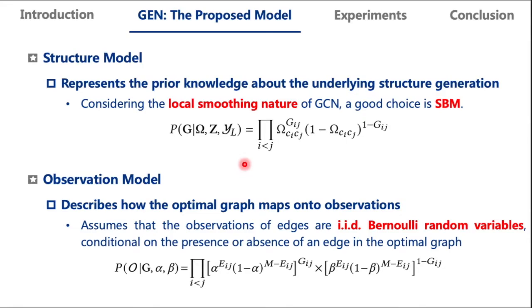This assumption is well accepted in community detection and graph generation. Specifically, we parameterize the possible observation by two probabilities. The true positive rate, alpha, is the probability of observing an edge where one truly exists in the optimal graph G. And false positive rate, beta, is the probability of observing an edge where none exists in the optimal graph G. Let's suppose that out of M observations, we observe an edge on Eij of them and no edge on the remaining M minus Eij. So we get the probability of this observation.